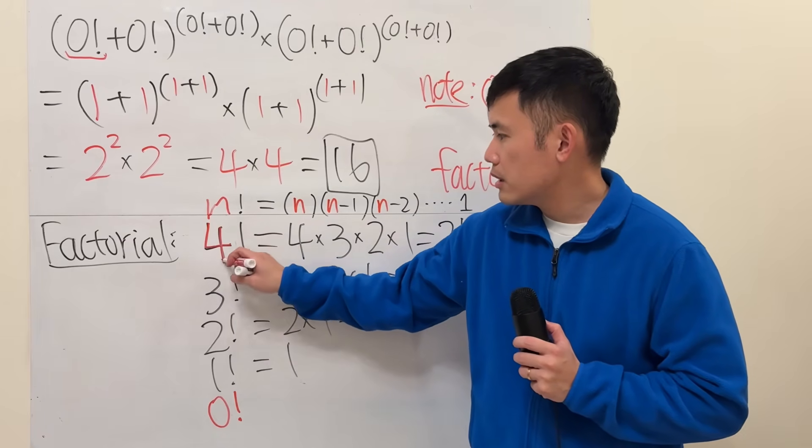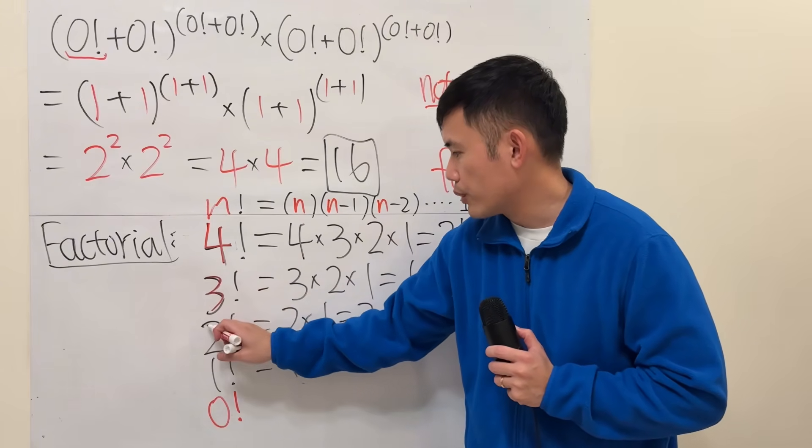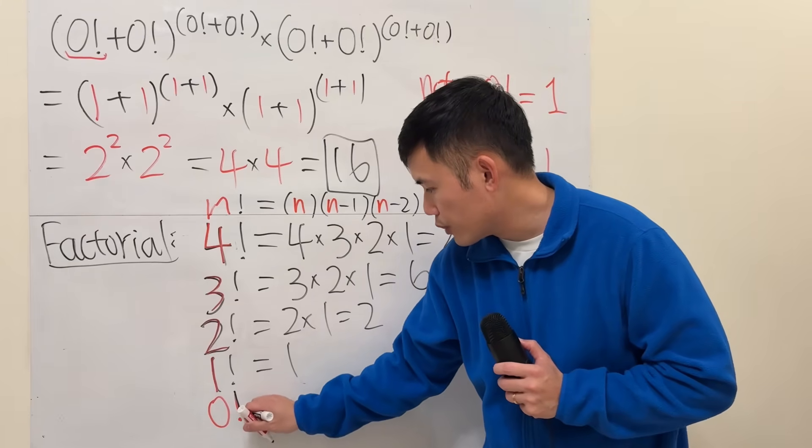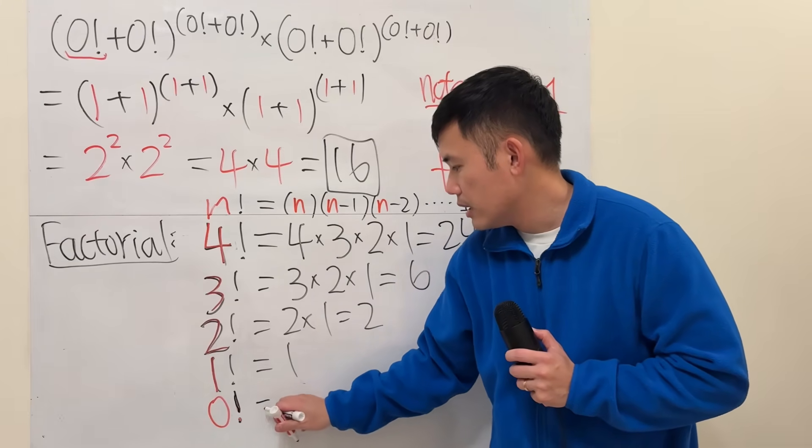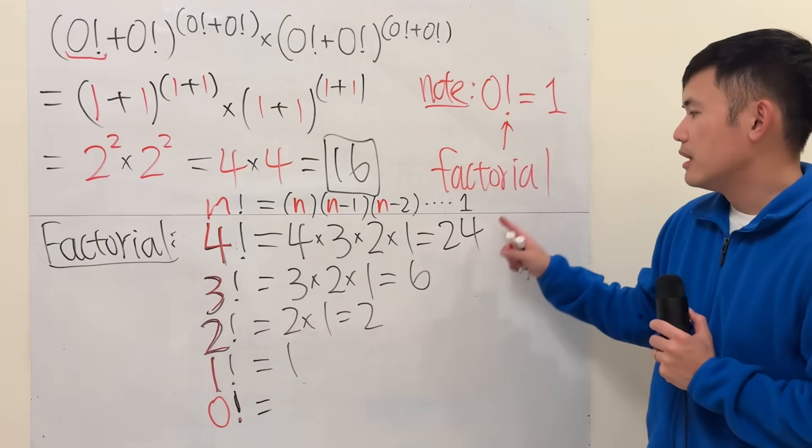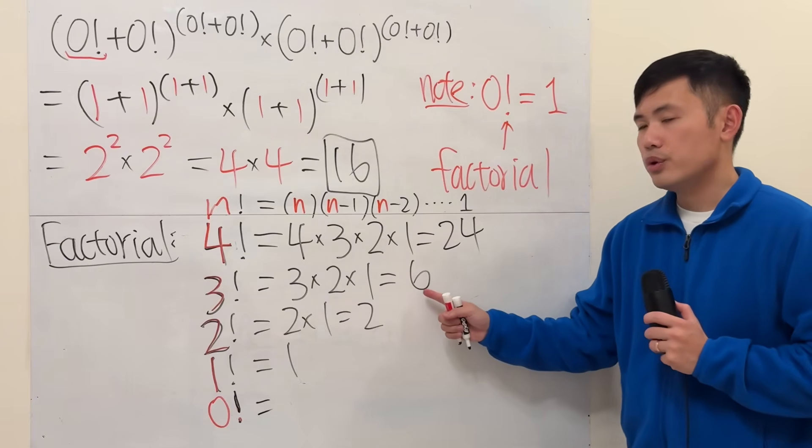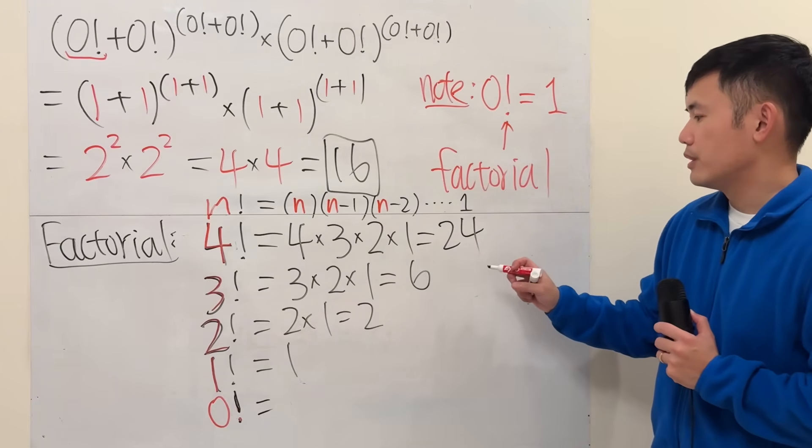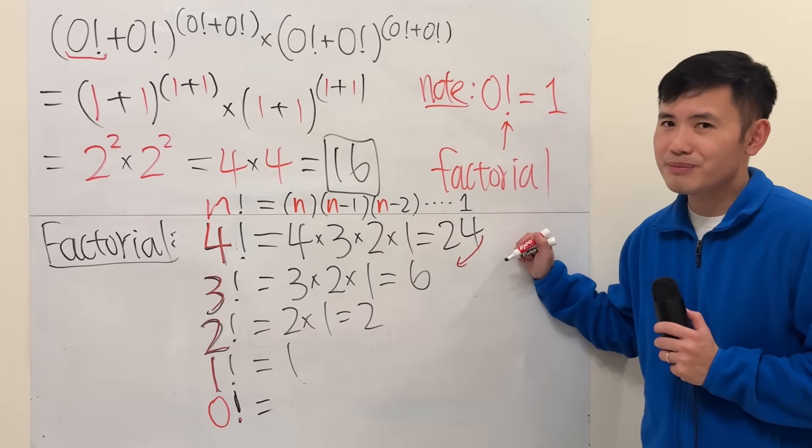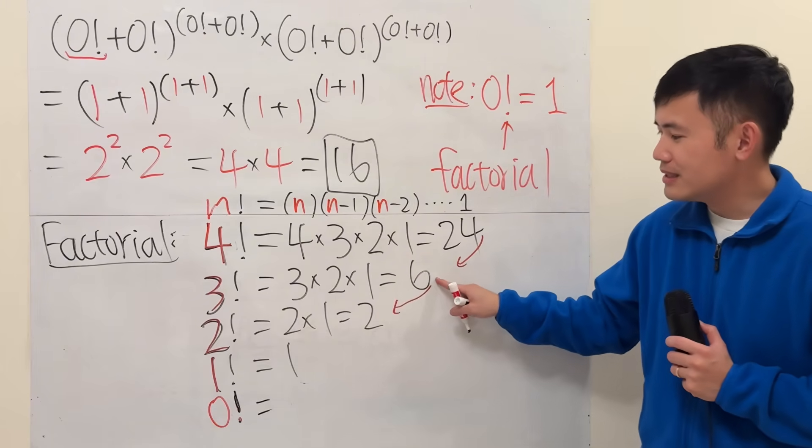Zero factorial should equal one. Check this out. If you look at what I have here: 4 factorial, 3 factorial, 2 factorial, 1 factorial, and then 0 factorial. That's the pattern. On the right side, the result from 24 to 6, what do we do? Don't say subtract 18. It kind of works, but no, because that's not going to work out nicely if you go from 6 to 2.